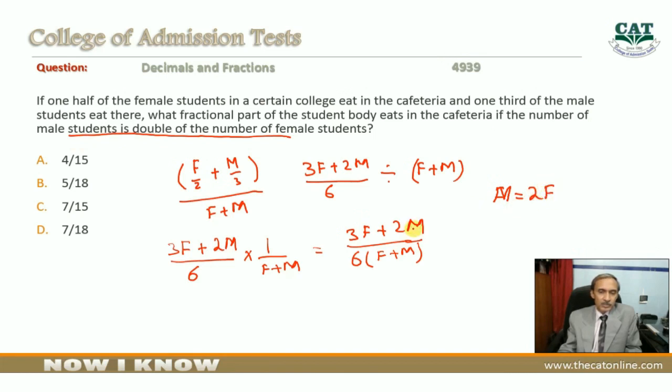Here M is equal to 2F. Substituting this into the expression, we get (3F plus 4F) over (6 times 3F), which equals 7F divided by 18F.